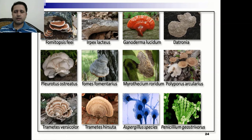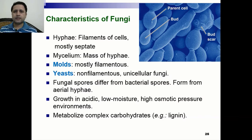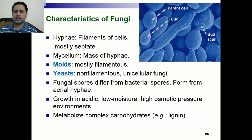Here are some characteristics of fungi: fungi have hyphae, which are filaments of cells, and mostly are septate while some are non-septate. They have mycelium, which is a mass of hyphae. Molds are one type of fungus and are mostly filamentous. Yeast are non-filamentous and are mostly unicellular fungi. Some fungal spores differ from bacterial spores because they are formed from aerial hyphae, and they can grow in acidic environments, low moisture content, and high osmotic pressure environments.